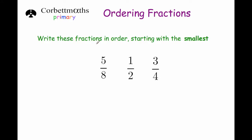Here's another question. It says: write these fractions in order starting with the smallest. We've got 5 eighths, 1 half and 3 quarters. To make this question a lot easier, it would be much easier if they had the same number on the bottom of the fraction. If you need to recap equivalent fractions, go to corporatemavsprimary.com and watch the video on equivalent fractions.